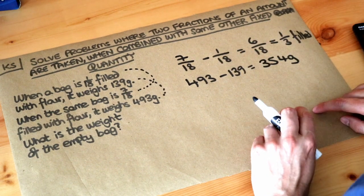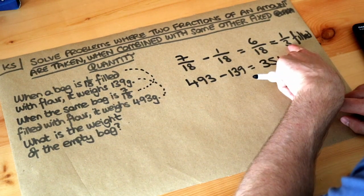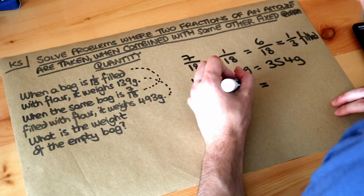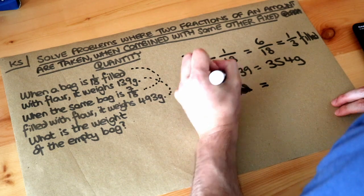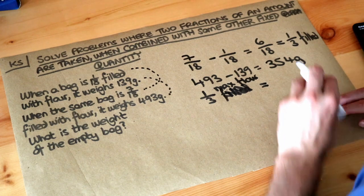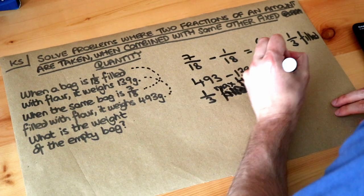That means we filled it up with 354 grams of flour. So if we fill the container by a third extra and we filled it with 354 grams, that means a third of the maximum flour—so the maximum flour you could have if you completely filled the bag—a third of that is 354 grams.